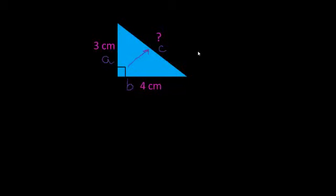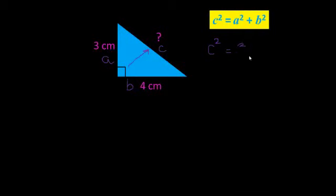Okay, and just to remember our formula here is C squared is equal to A squared plus B squared. So C squared, the hypotenuse squared is equal to A squared. So A is three, so three squared, three squared plus B squared. So B is four, so we've got four squared.